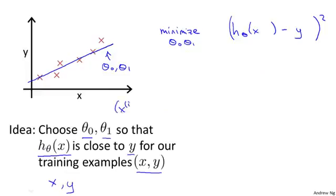Remember that I was using the notation x i comma y i to represent the i-th training example. So what I want really is to sum over my training set, sum from i equals 1 to m, of the square difference between the predicted price of the house and the price that it was actually sold for.